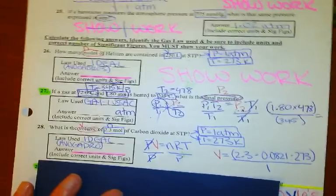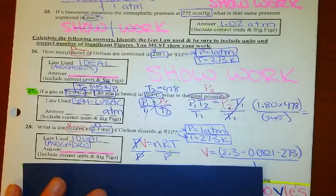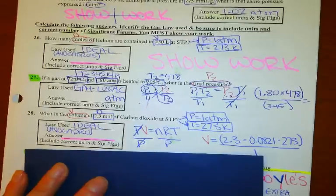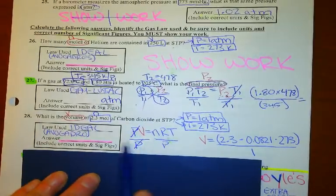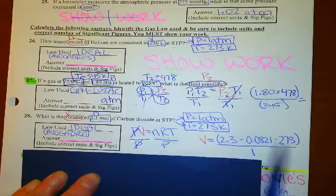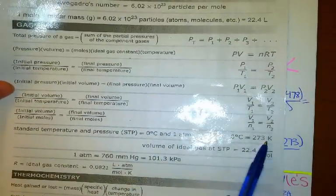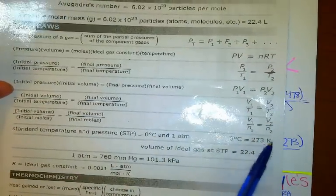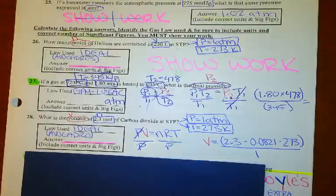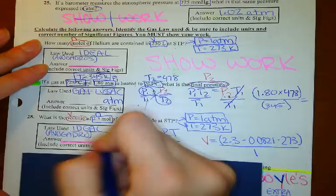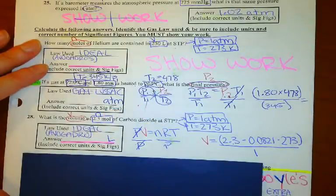For problem 28, I showed you the work — it's the ideal gas law again. You could do it as Avogadro's if you know how. PV = nRT, solving for volume — I divided by pressure and plugged in. Remember STP on the back of your periodic table: standard temperature is zero Celsius, which means 273 Kelvin, and one atmosphere. Check your work and make sure you set it up right. The unit for volume is liters.